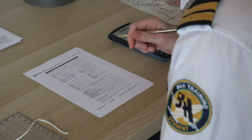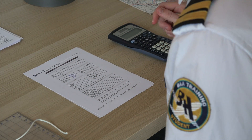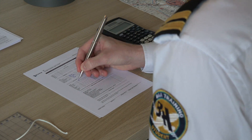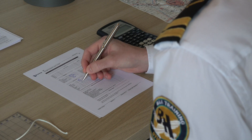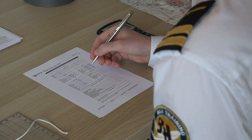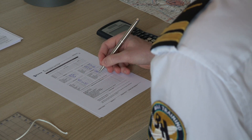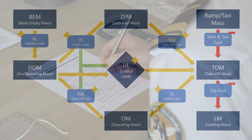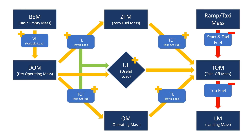An integral part of preflight preparation is checking that the mass of the aircraft is within specified limits. But in order to do that, it's important to know about the different masses and their definitions. So in this video, we'll take a look at them.